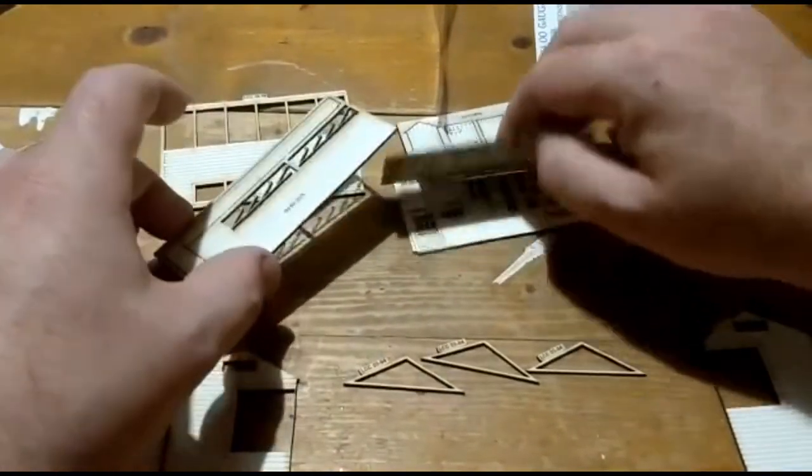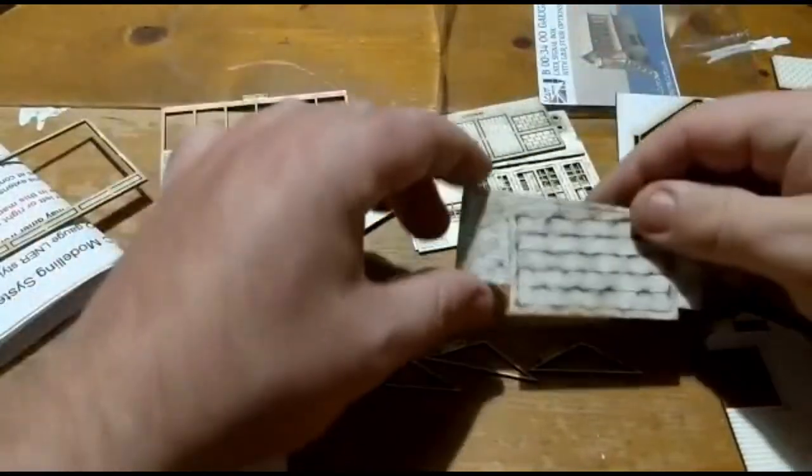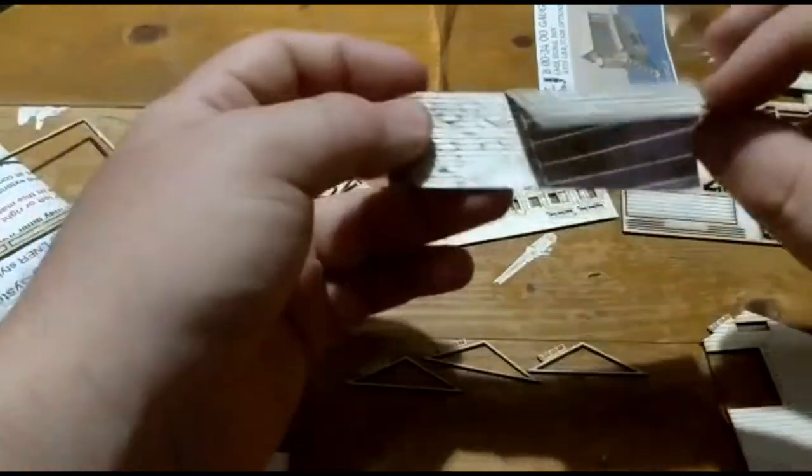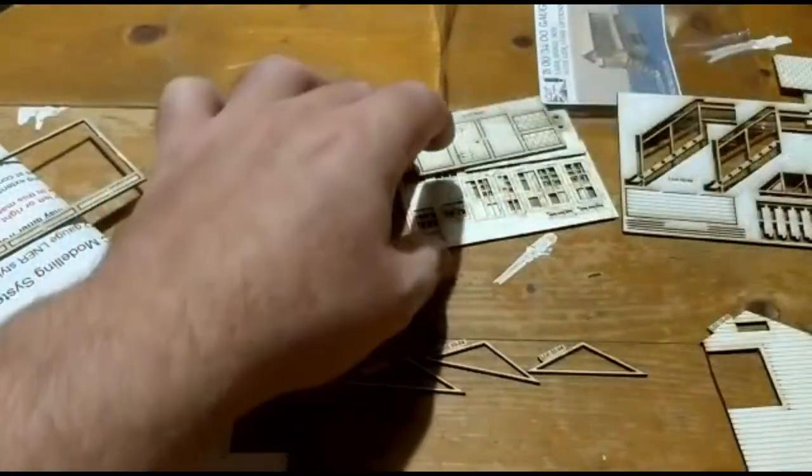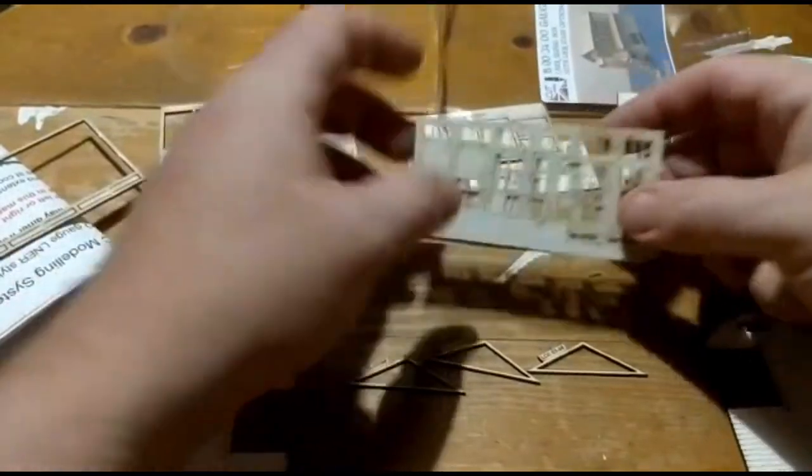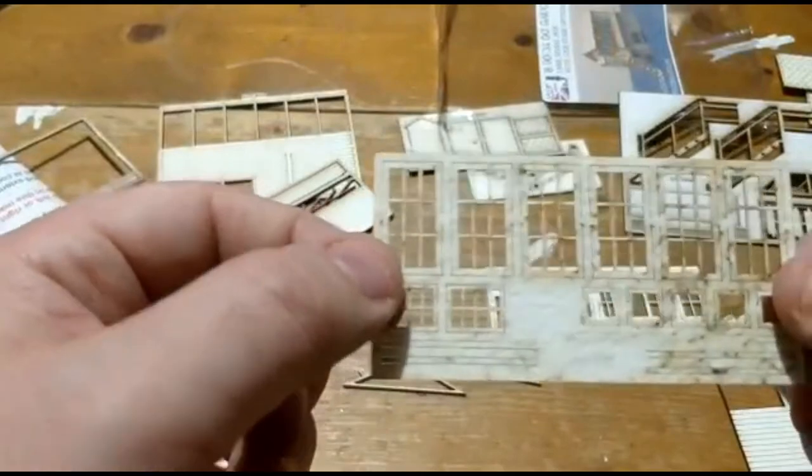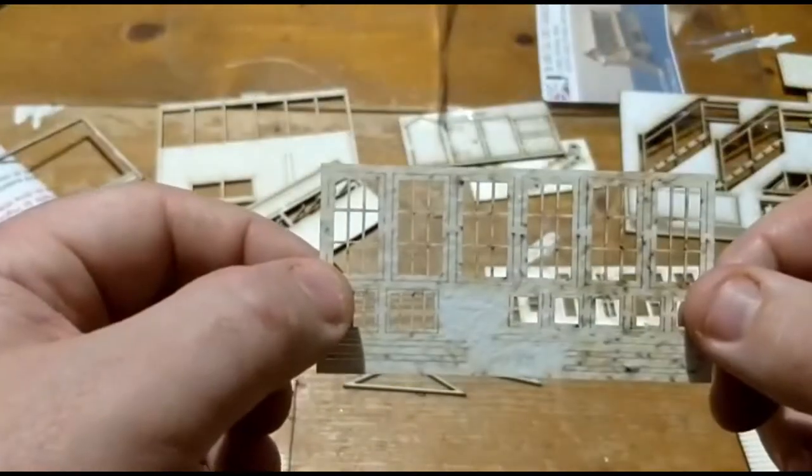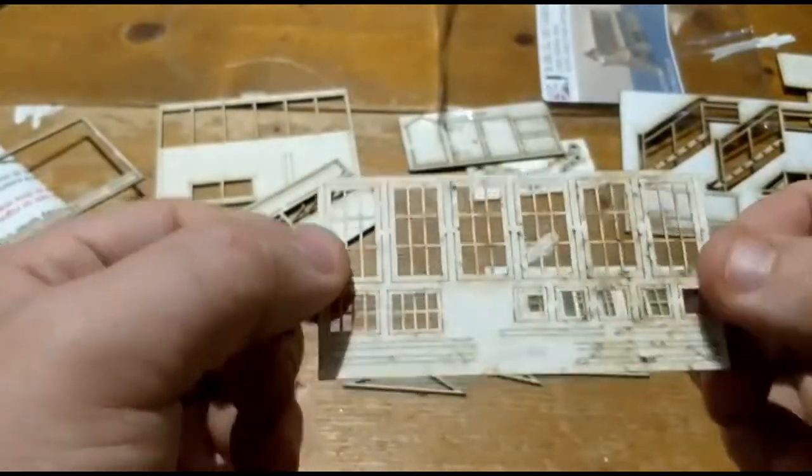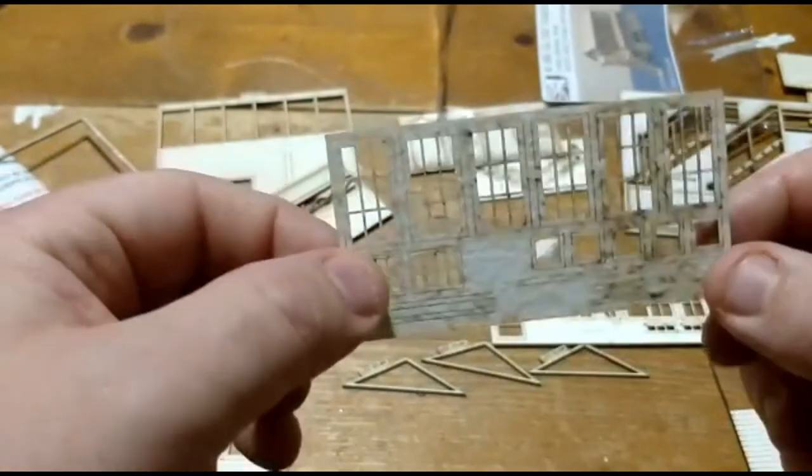And again, all the little bits. Stripping for the roof, strips for the roof on there. And these windows. Once you've got a bit of clear plastic on the back of them, it's going to give you a really good look, being able to see through the windows.